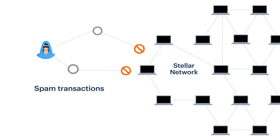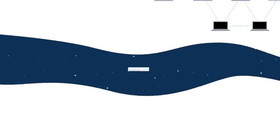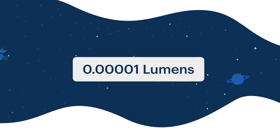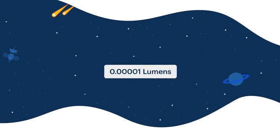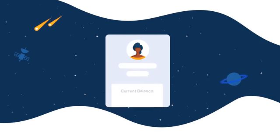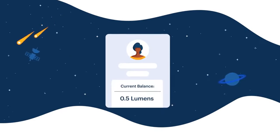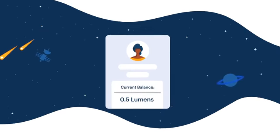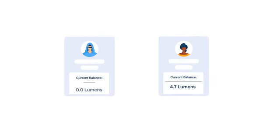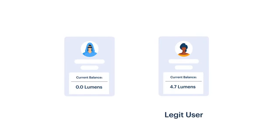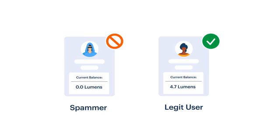In addition to serving as a universal currency translator, lumens also protect the integrity of the network by preventing spam. Transaction fees are paid in lumens, and every Stellar account has a minimum balance, too. The transaction fees and minimum balance are low enough that legitimate users don't really notice them, but high enough to disincentivize spammers.